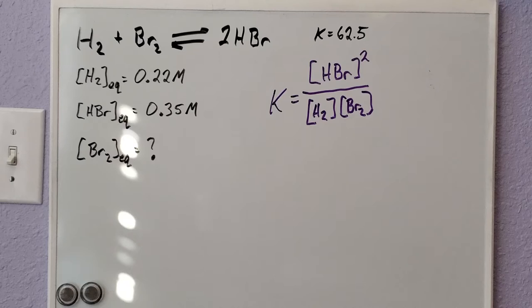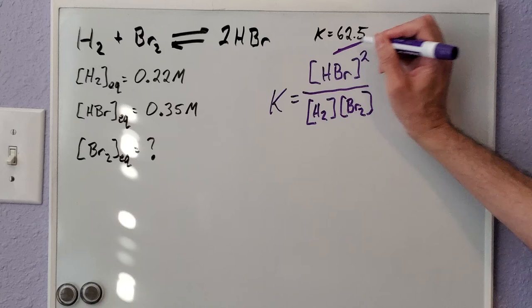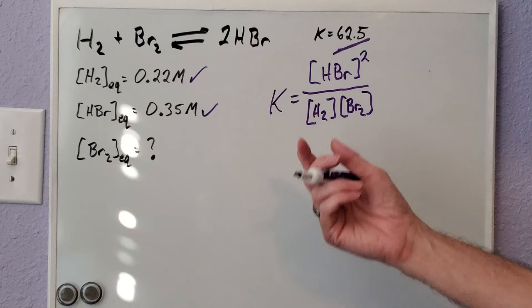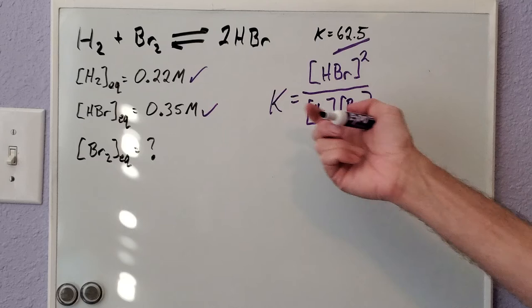Luckily for us, we have a lot of these variables already. We have our K, we have our HBr, we have our H2. K is very specific for equilibrium, so we know all of these can be plugged into this to solve for Br2. Let me rewrite this so you can actually solve for it.